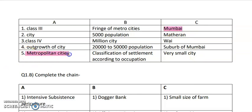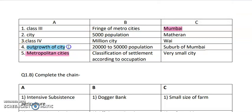Now outgrowth of city refers to the area surrounding the city — the outside area. We call it suburb, and it is also called the fringe of metro cities.